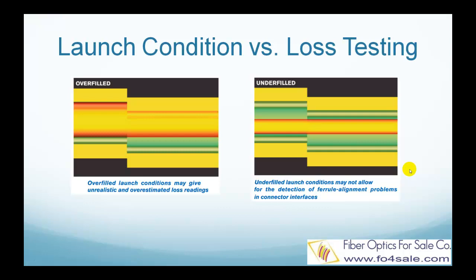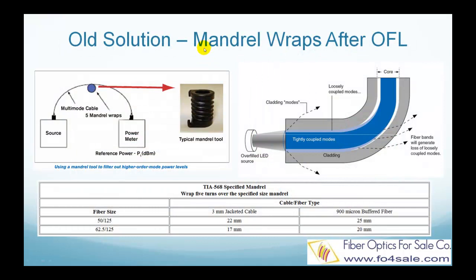Now let's examine the two most popular methods. The current standard way to test multimode fiber is the Mandrel wraps after overfilled launch method. The light source is an overfilled surface-emitting LED source. After that, the fiber is wrapped around a specific sized Mandrel for five turns. The purpose of this wrap is to remove higher order modes, as shown in the right picture. The higher order modes are more susceptible to bending losses. So after this Mandrel wrap, the modes in the fiber are very similar to a condition called equilibrium mode distribution. The TIA568 specification specifies Mandrel sizes and turns for both 62.5-micron and 50-micron multimode fibers, as listed in the table.